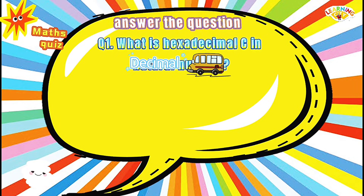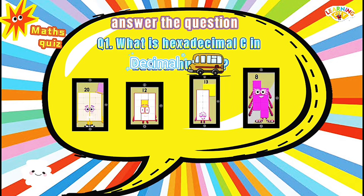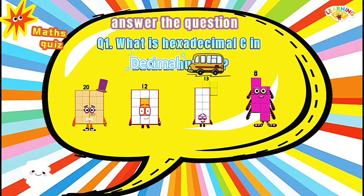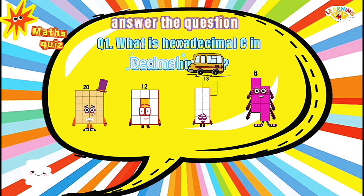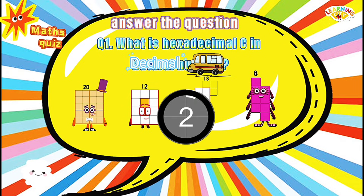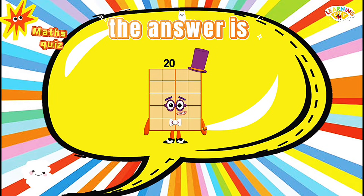Question No. 2: What is hexadecimal C in decimal? Options are 21, 20, 12, 13, 8. The answer is 20.